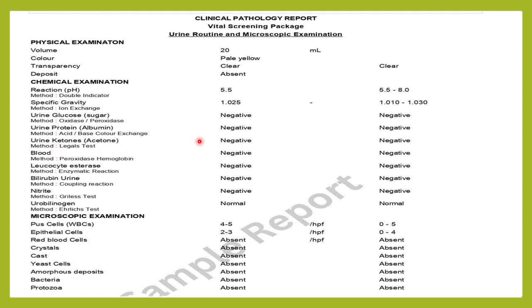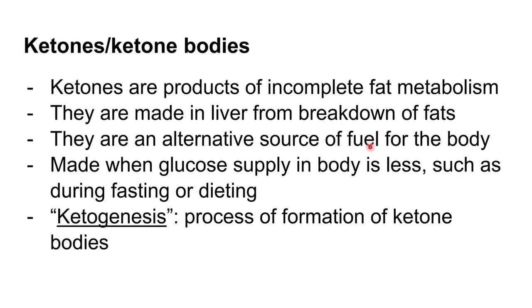These ketone bodies are water soluble and are always metabolized in the liver. In a normal individual, the urine reference range shows no ketones. Ketone bodies are produced whenever there is incomplete fat metabolism — whenever fat metabolism is incomplete, we get these ketone bodies, mainly produced in the liver from the breakdown of fats.